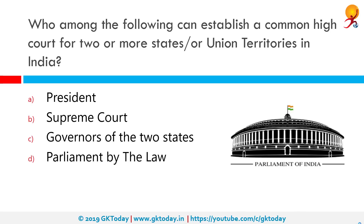Who among the following can establish a common high court for two or more states or union territories in India? The correct answer is parliament by law. India is a democracy having a federal structure of government. Laws are made separately at different levels by the union government for the whole country and by the state governments for their respective states, as well as by local municipal councils at the district level. The legislative procedure for the union government requires proposed bills to pass through both houses of parliament — the Lok Sabha and the Rajya Sabha. For states with bicameral legislatures, bills must pass at least in the Vidhan Sabha, but not mandatorily in the Vidhan Parishad. For states with unicameral legislature, laws need to be passed only in the Vidhan Sabha.